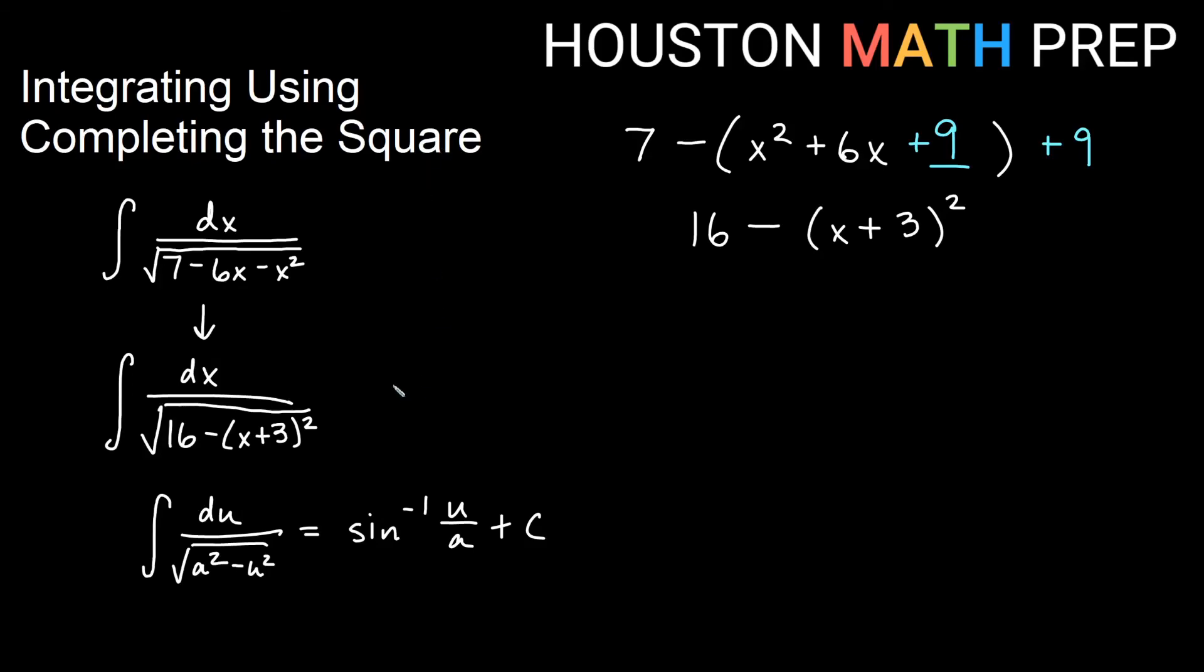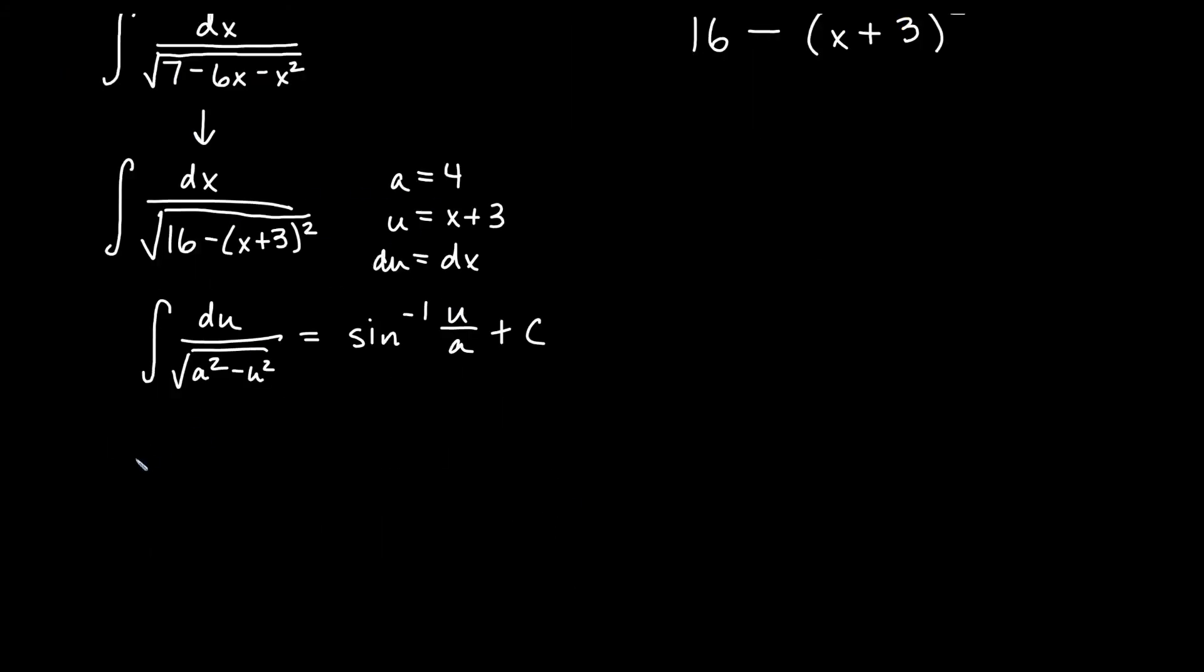So for this one here, we'll go ahead and say our answer. We have the inverse sine of u over a, which is going to be (x+3)/4, plus our constant of integration from our formula there.